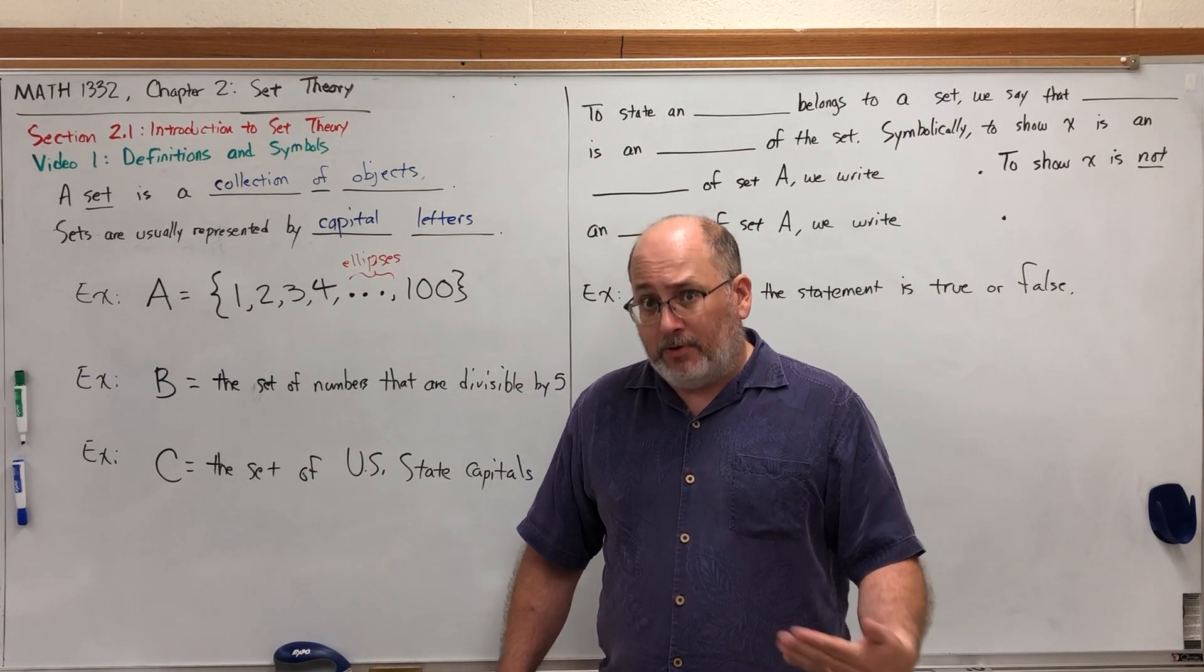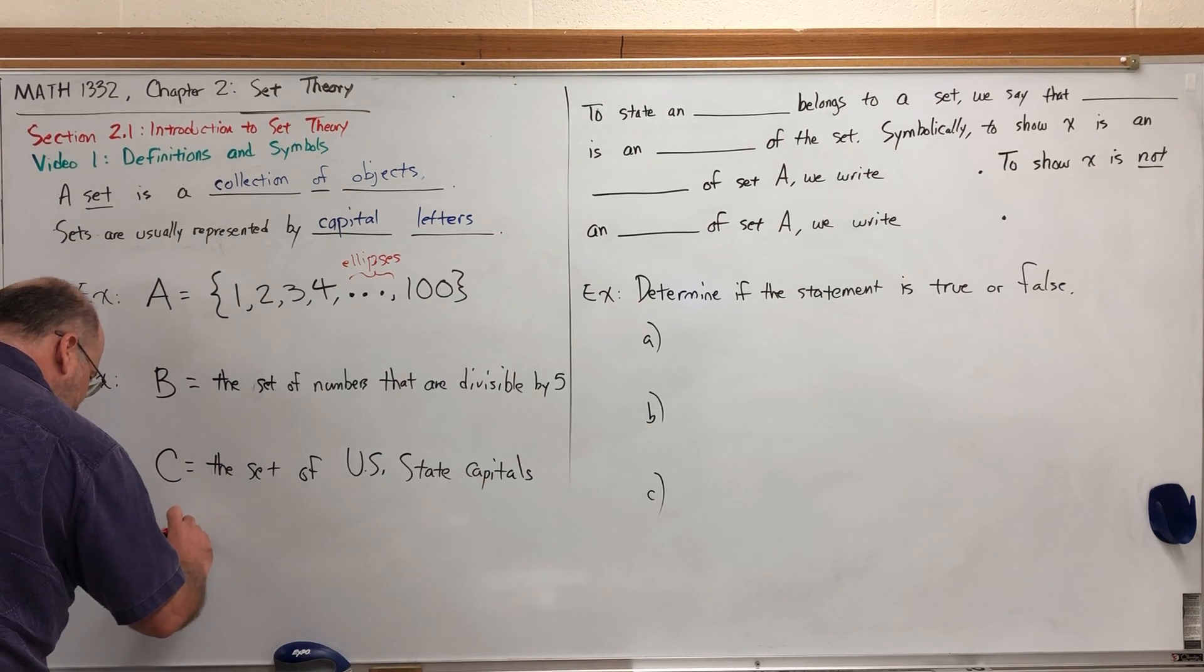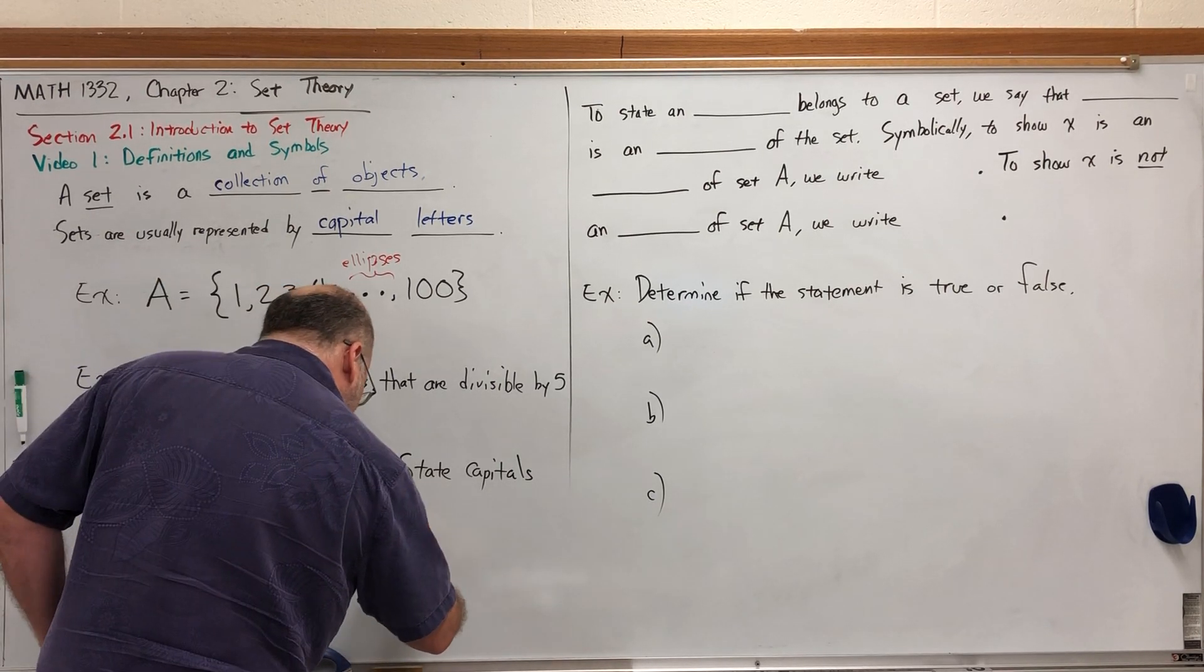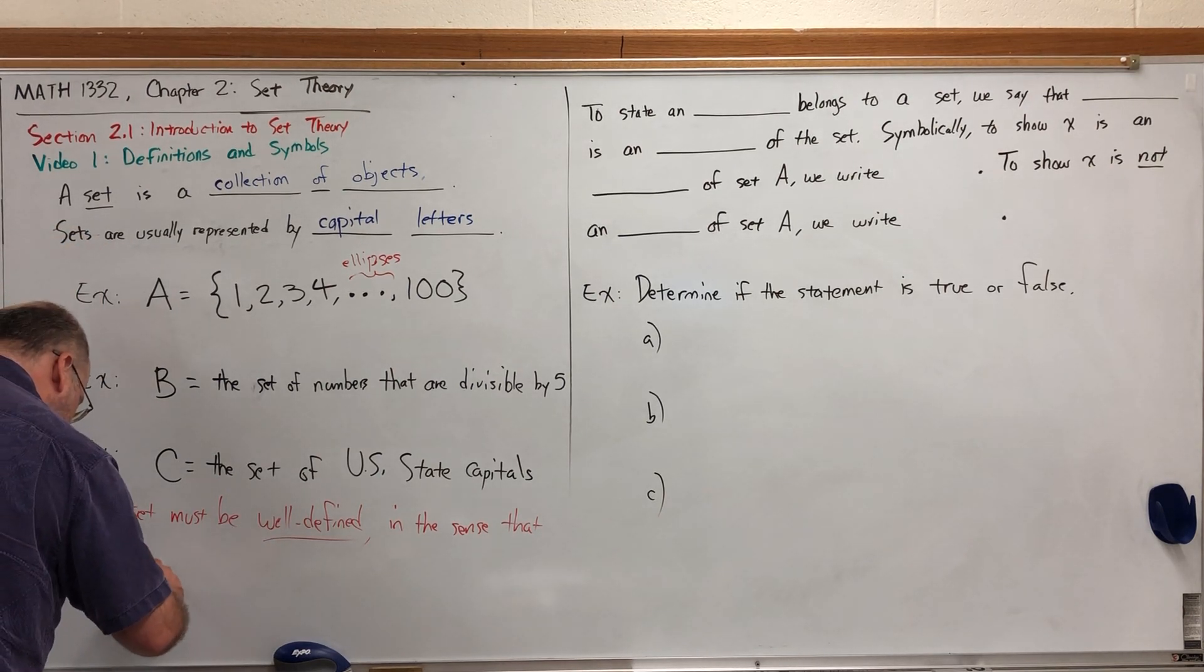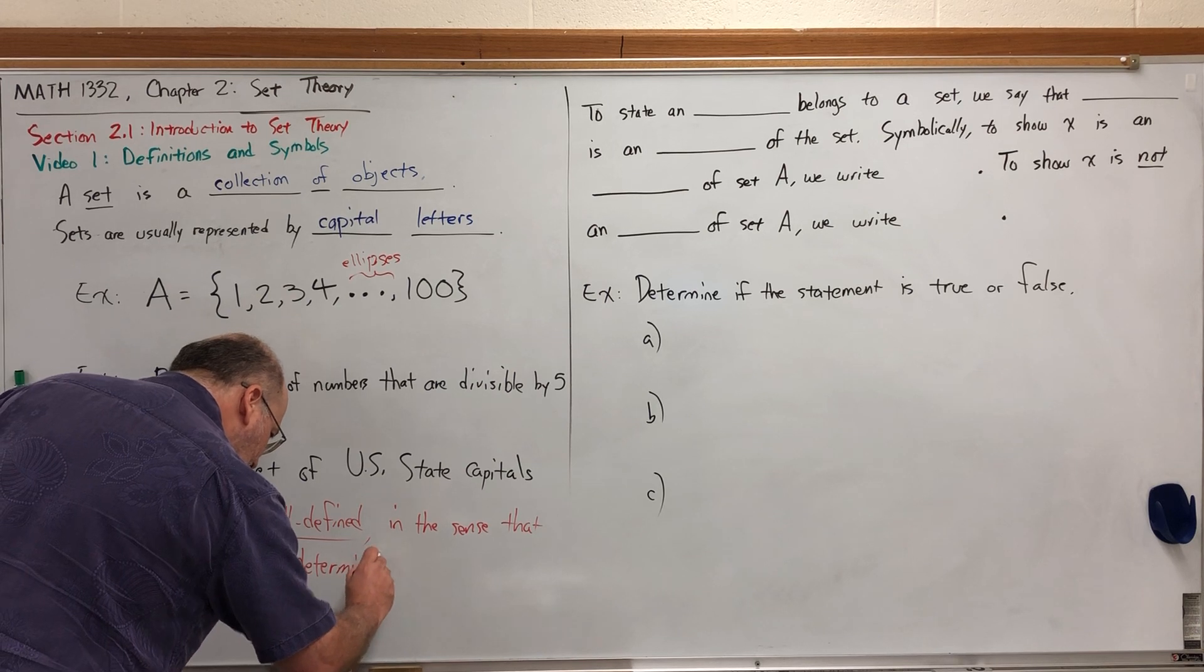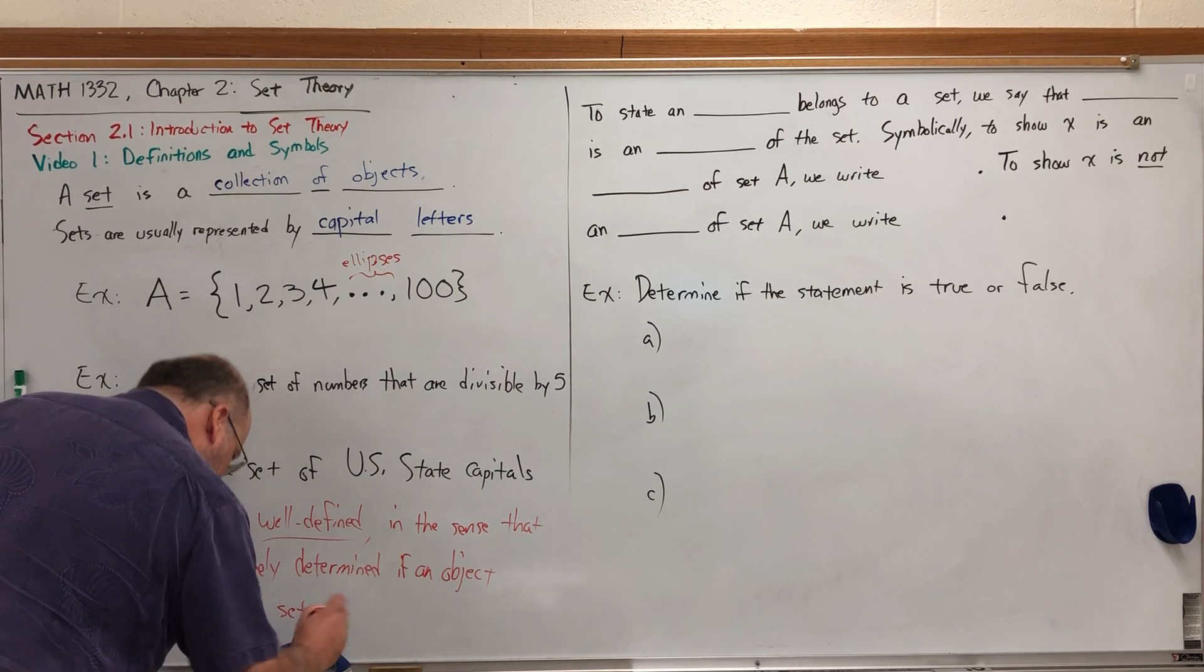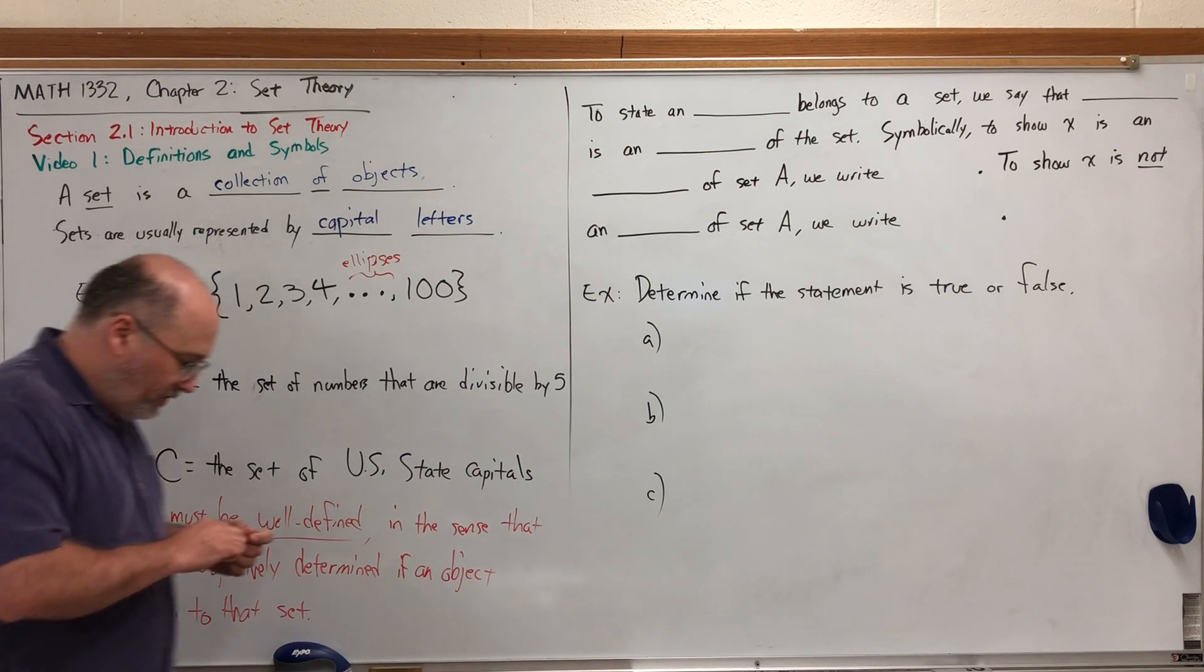It should be well-defined. In other words, if I were to ask does an element belong to a set, we should be able to determine yes or no without any subjectivity. It should be objectively true or false whether or not an element belongs to a set. That property of sets is called well-defined. A set must be well-defined.